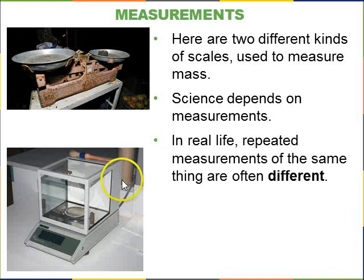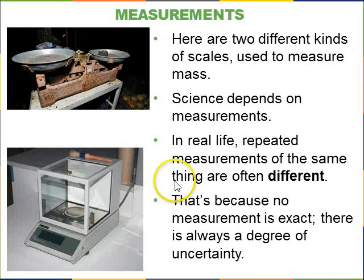In real life, if you try to measure the same thing in two different ways, you often get different results. Or even if you measure it the same way but repeat the measurement again and again, you get this scatter of measurements. Sometimes you get a histogram which looks like a little bell curve. The reason is that no measurement you make is exact. There's always a degree of uncertainty.